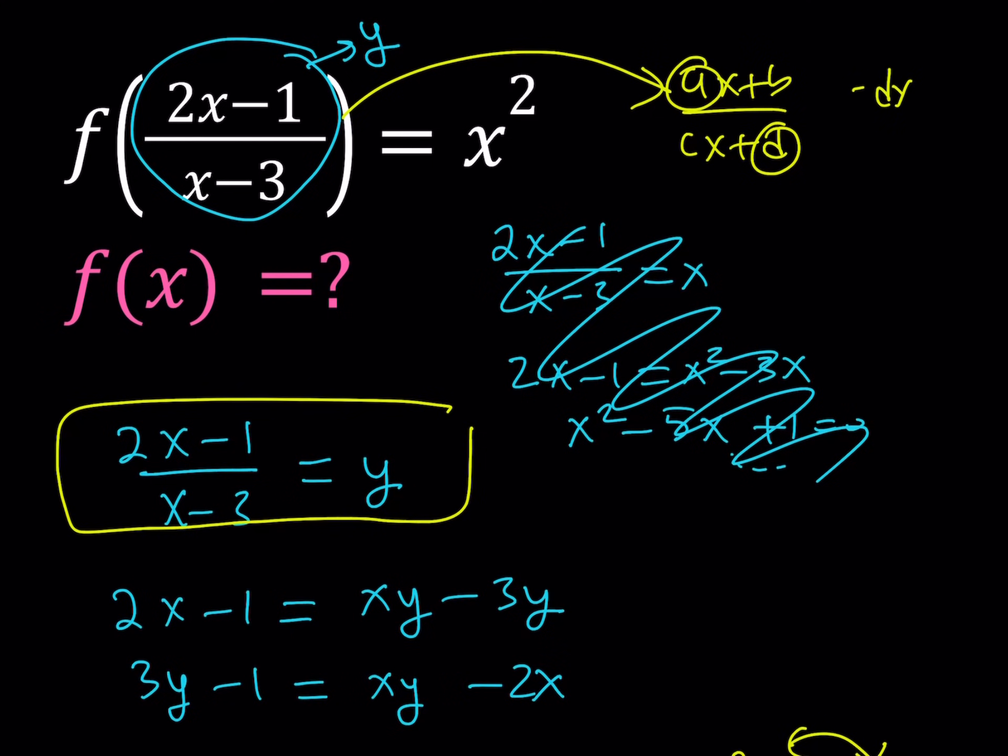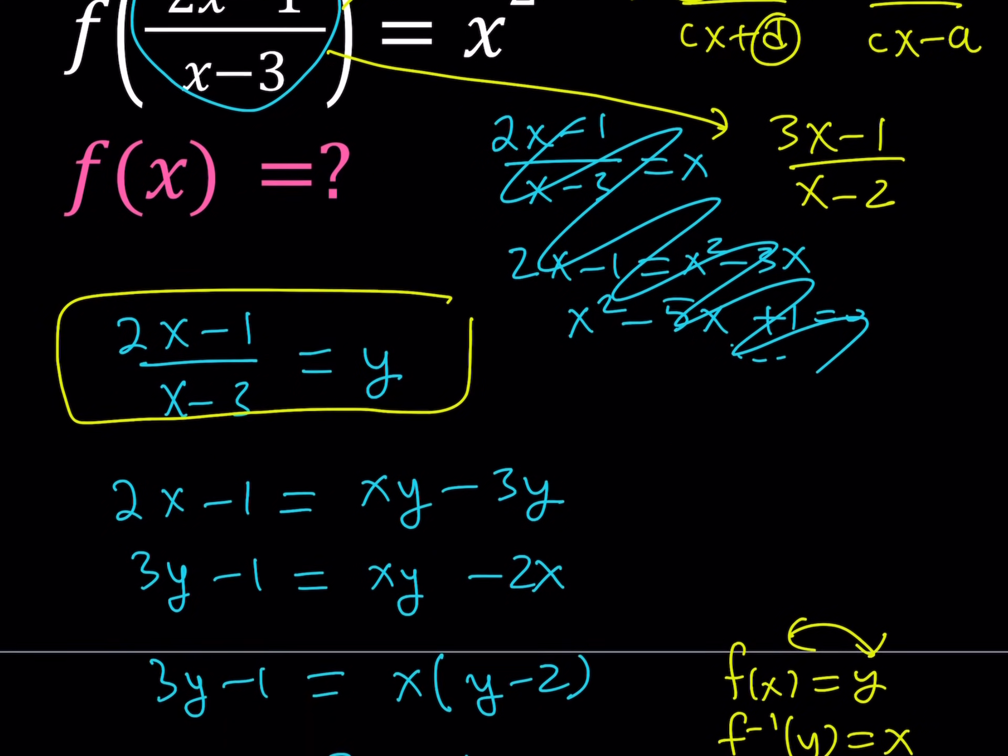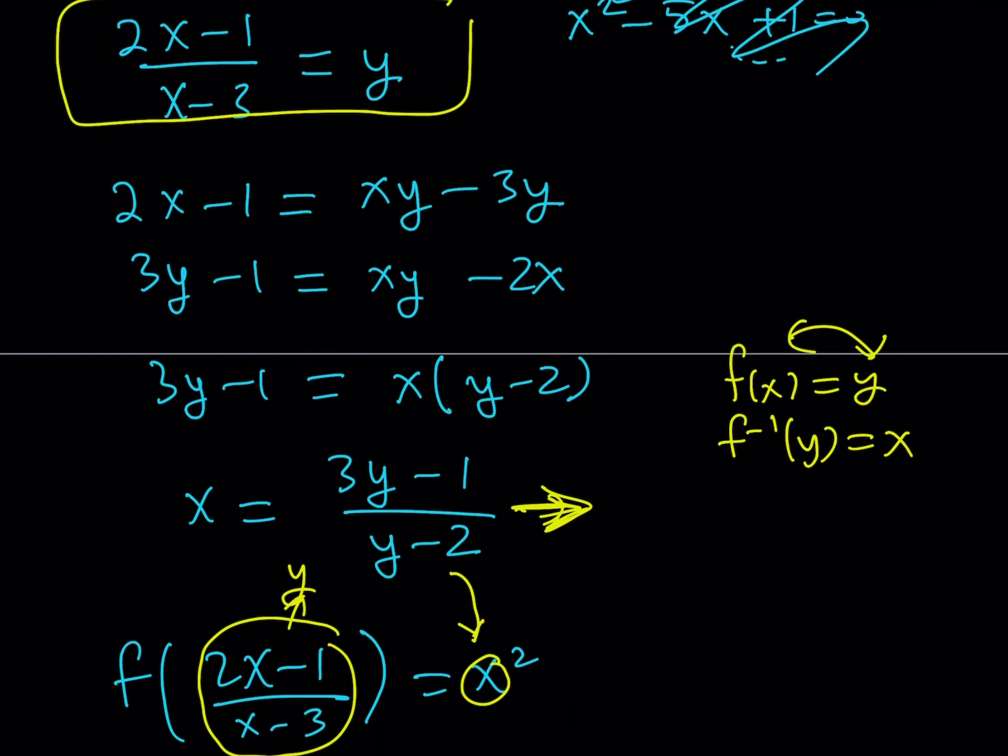you have to change a and d and also make sure that you are switching the coefficients. So d is going to be here as negative dx plus b, and the a is going to come down, but it's just going to become negative a. And this is going to be the inverse of this function. By using that rule, you can safely say that the inverse of this function is going to be 3x minus 1 over x minus 2, which is pretty much what we found here.